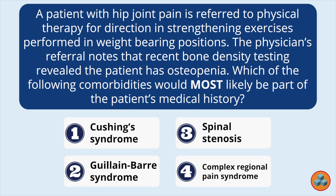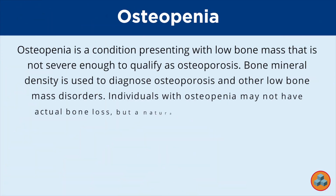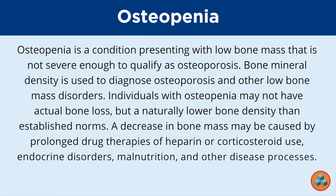Obviously, your ability to answer this question is going to depend primarily on your knowledge of osteopenia and the four pathologies. Let's start with osteopenia and progress to each of the options. Osteopenia is a condition presenting with low bone mass that is not severe enough to qualify as osteoporosis. Bone mineral density is used to diagnose osteoporosis and other low bone mass disorders. Individuals with osteopenia may not have actual bone loss, but a naturally lower bone density than established norms.